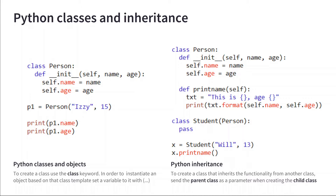To create an object, you write a variable name, equals, then call the class name with the parameters needed for the initializer. In this example: 'p1 = Person('Eze', 15)' creates a person with name 'Eze' and age 15. Then a print statement for those two properties should output 'Eze' and '15.'